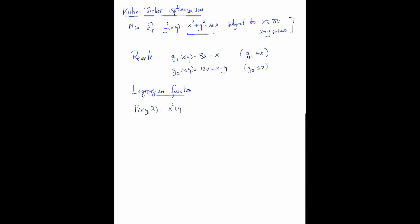The Lagrangian is x squared plus y squared plus 60x plus lambda 1 times (80 minus x) plus lambda 2 times (120 minus x minus y). And we're trying to minimize.